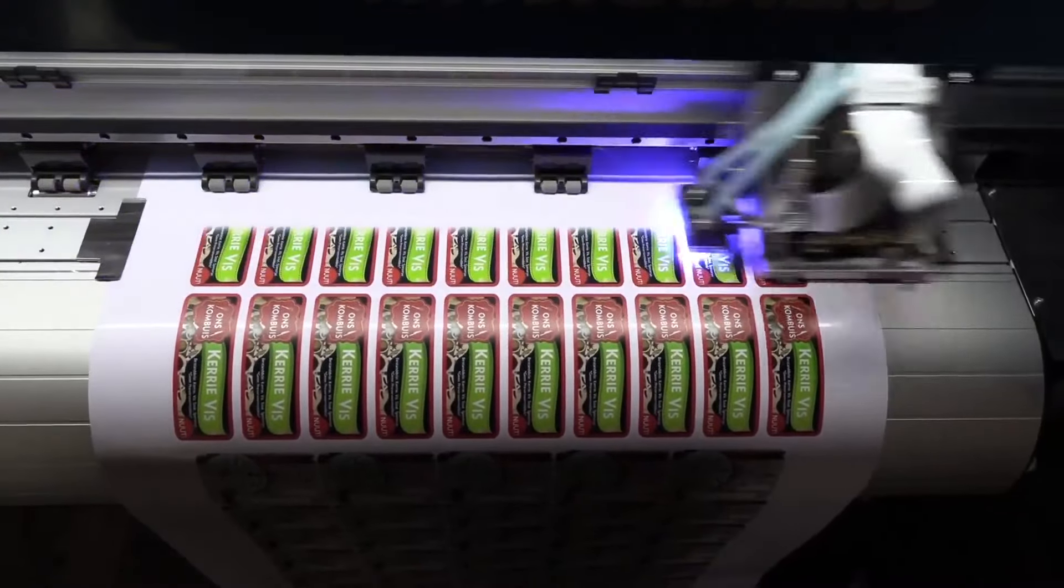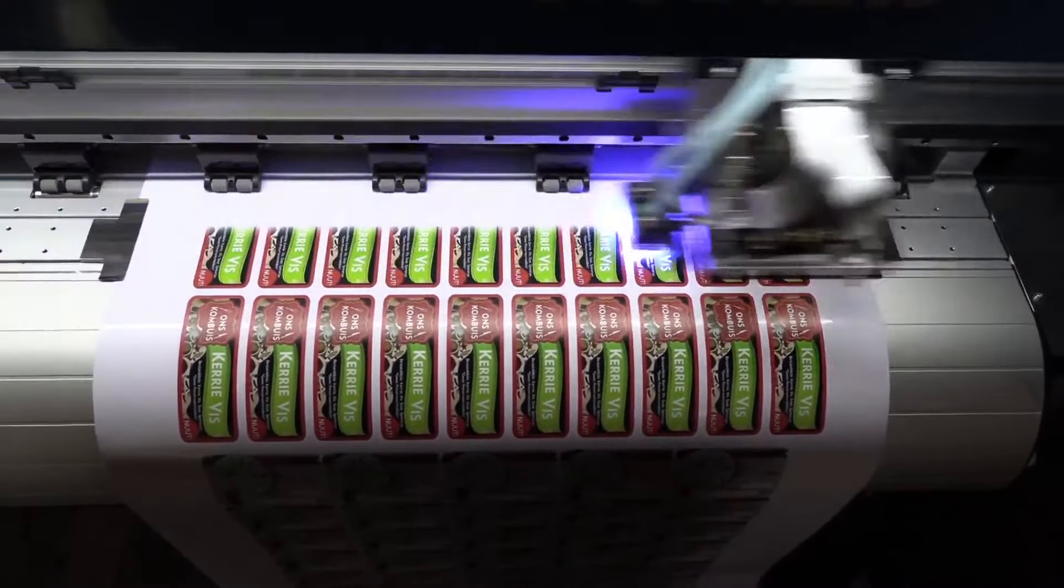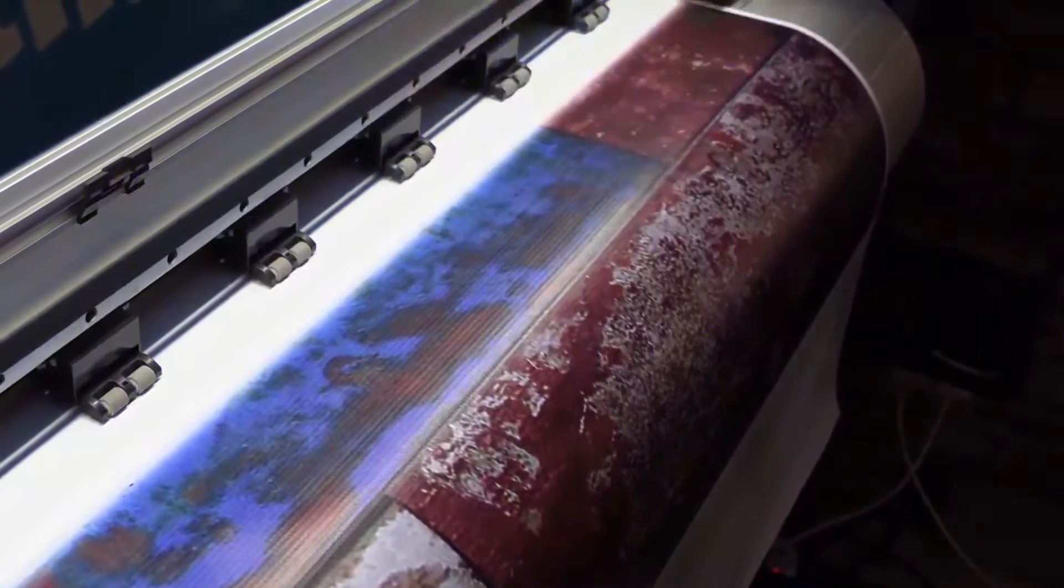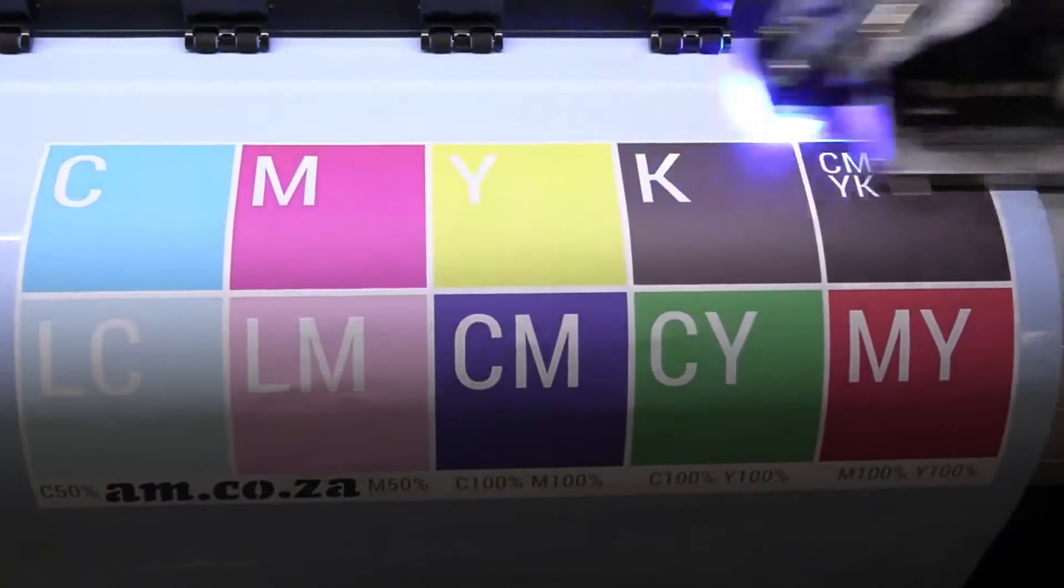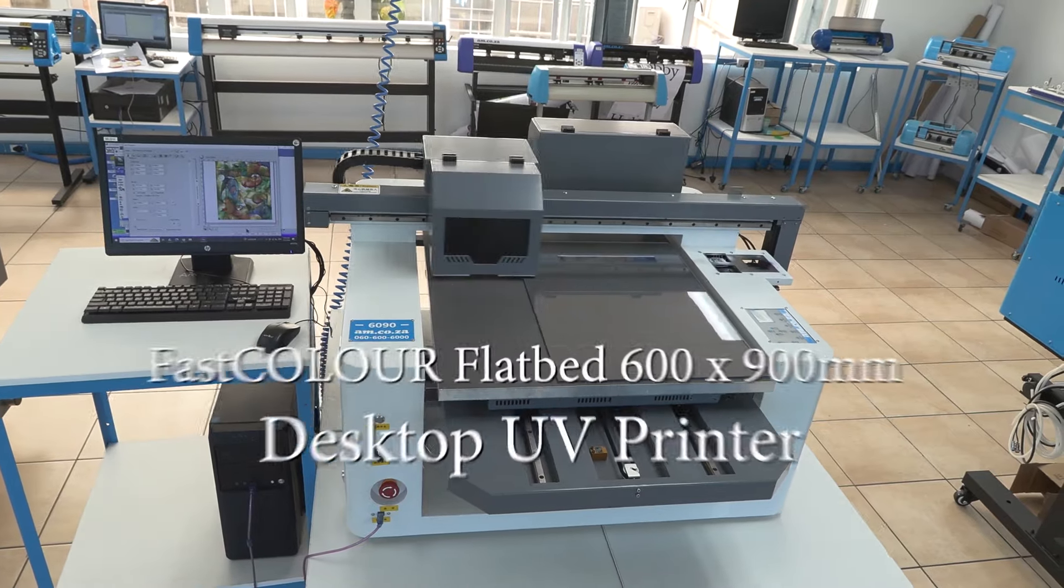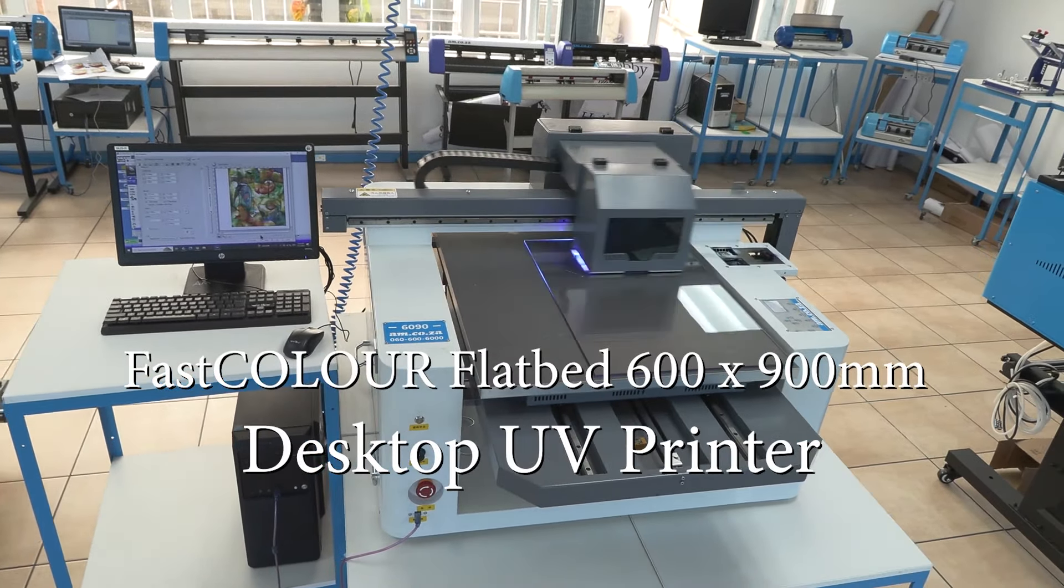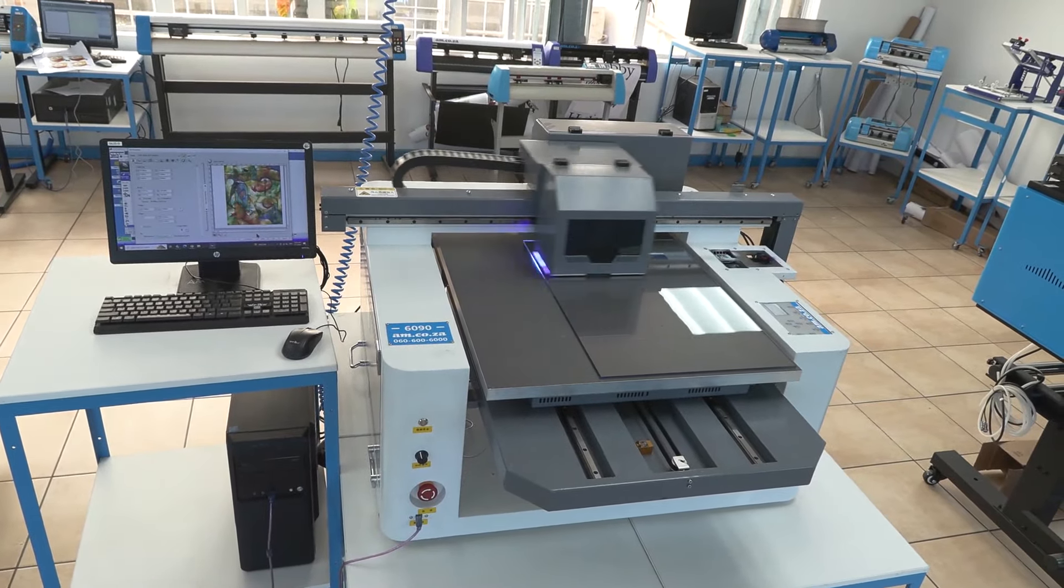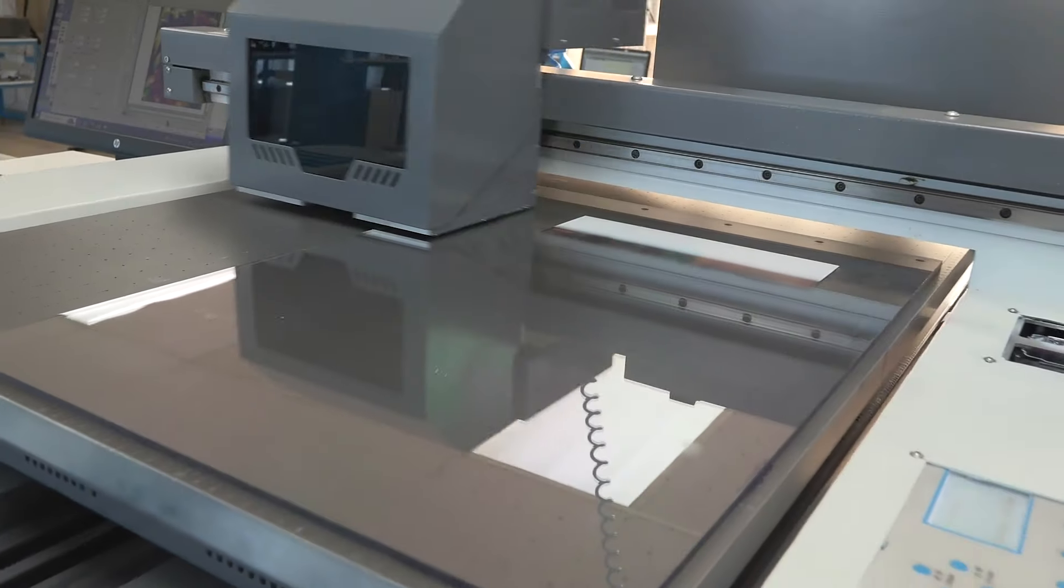UV printers are hugely popular due to the print quality, color density, and durable finish achieved by the instant drying of the ink. But what if you want to print on flat surfaces? This is the 600 by 900 millimeter UV flatbed from am.co.za, and it can print on just about any flat surface you can think of.